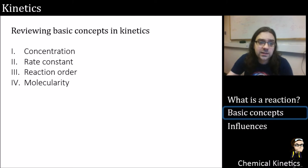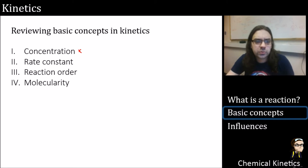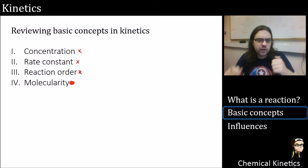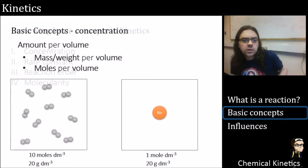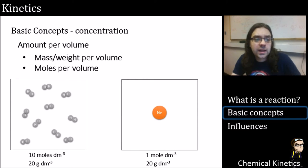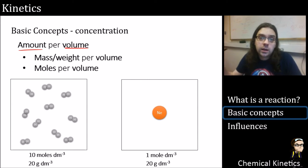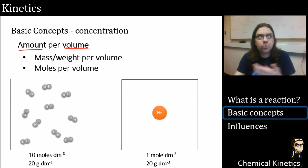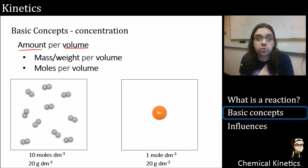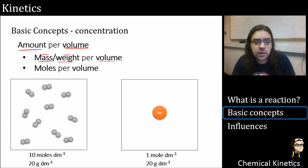How does this apply to kinetics? We're going to look at concentration — in kinetics we always work in concentrations — then rate constants, reaction orders, and the more complex concept of molecularity. Concentration is an amount per volume. This is far more useful in kinetics than a raw amount. We don't just want one mole or one gram of a substance — we want a specific concentration, because that is what we're interested in.